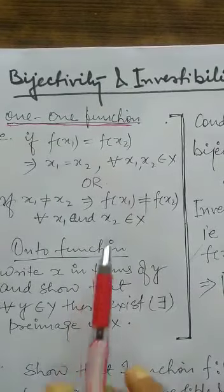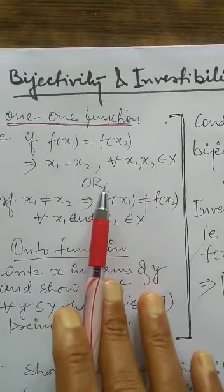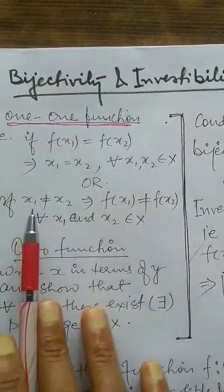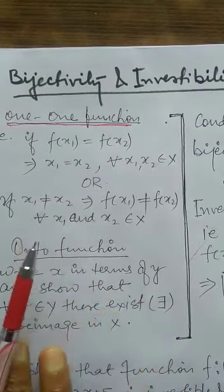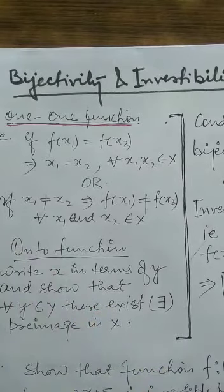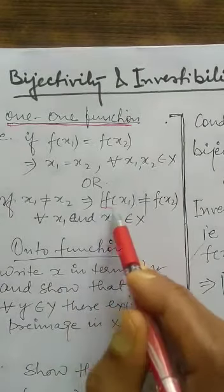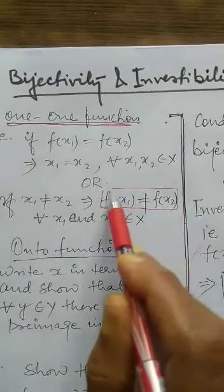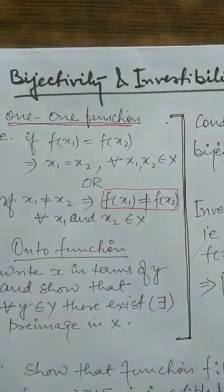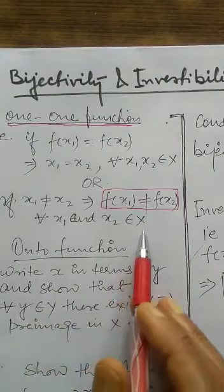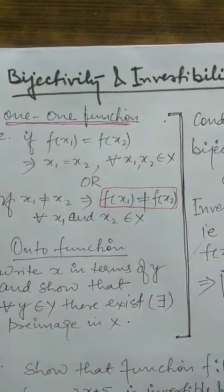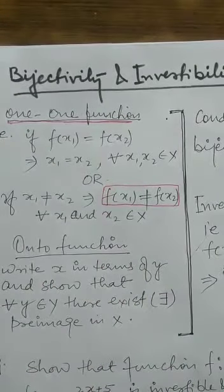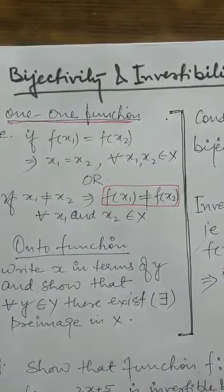At the same time, we can prove the function is one-one by assuming x1 is not equal to x2. If two elements of set X have been taken and they are different, then we will show that their images will also be different — that is, f(x1) is not equal to f(x2) for all x1 and x2 belonging to set X. This is the required condition for a function to be proved one-one.